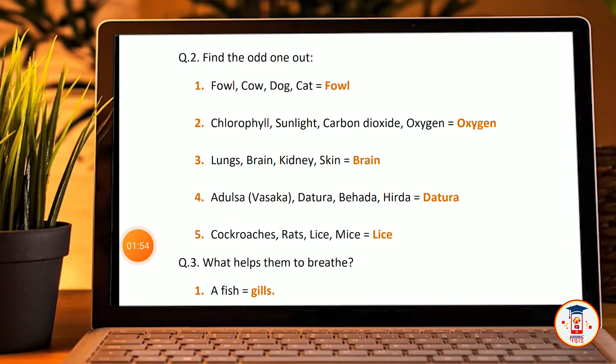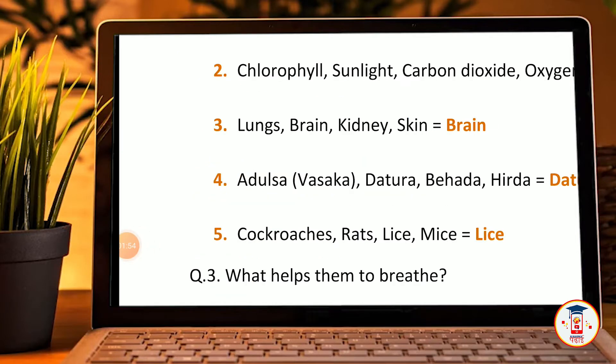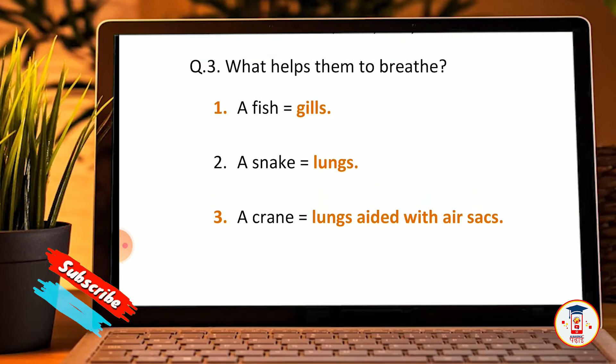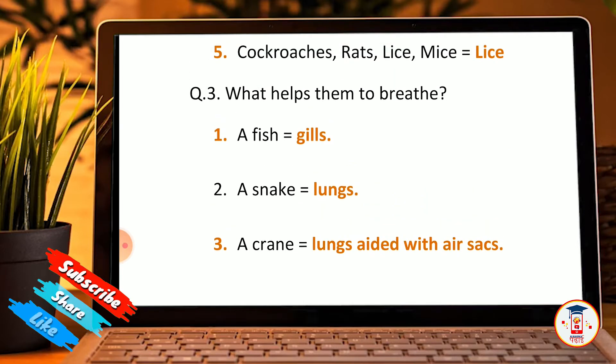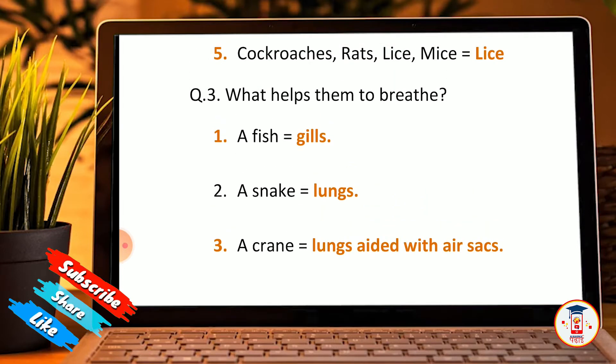Next set: biada, heda, and adusa — this one is different, so adusa is the odd one out as biada and heda are the same type. Next: cockroach, rats, lice, and mice — lice are different, so lice is the odd one out.